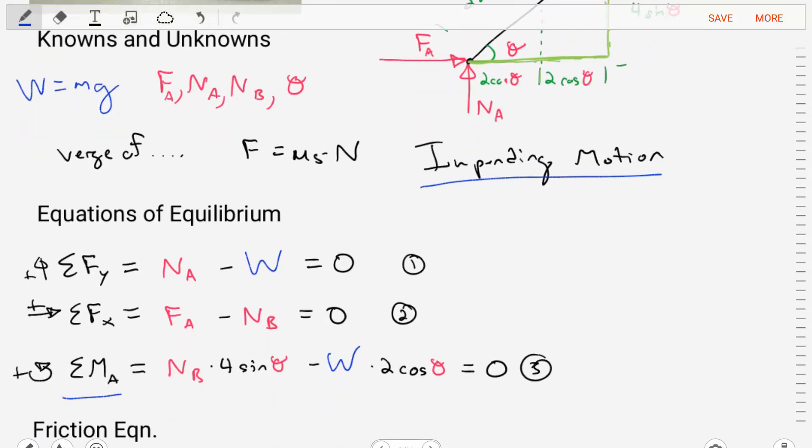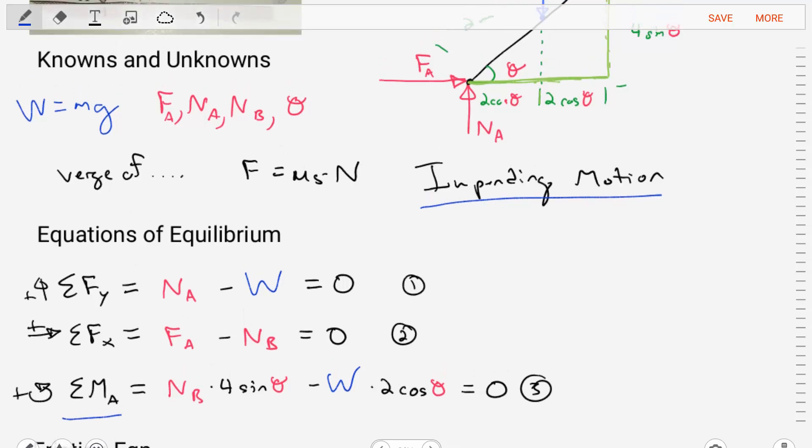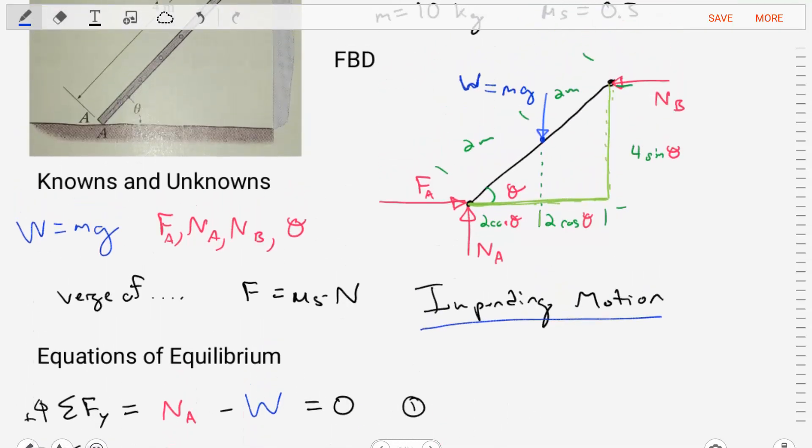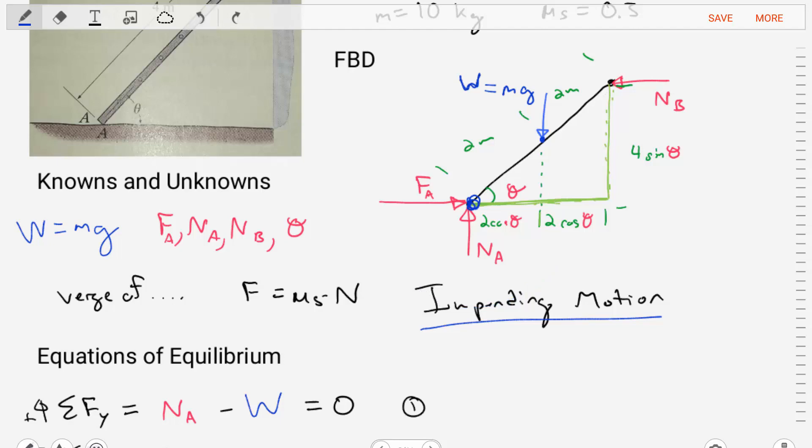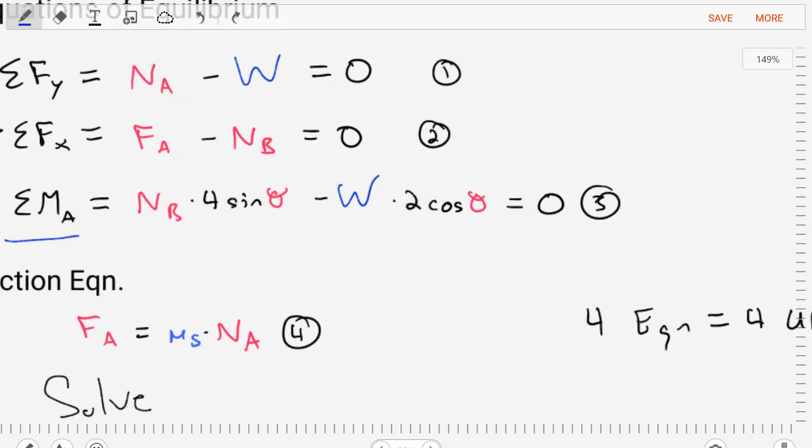And then let's make one more equation. We'll do a sum of moments equation. And we're going to select point A because most unknowns will cancel out if we select that point. And then we'll figure out what's going to cause moments around point A. Well, the weight is going to have a moment. It's going to cause a sense of rotation that is clockwise, which is negative. And the normal force B is going to cause a sense of rotation that is counterclockwise, which is positive. Since we broke up our triangle, we can very easily find the moment arms for each of those forces. And when we do, we find that the sum of the moments at point A is equal to the normal force B times 4 times sine of theta minus the weight times 2 times cosine of theta equal to zero.